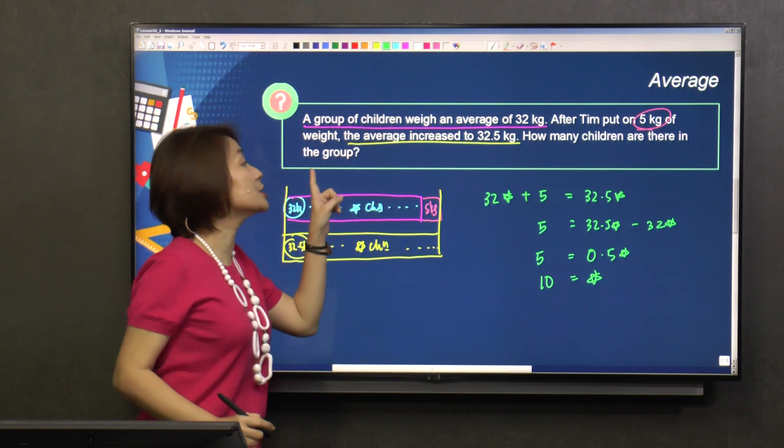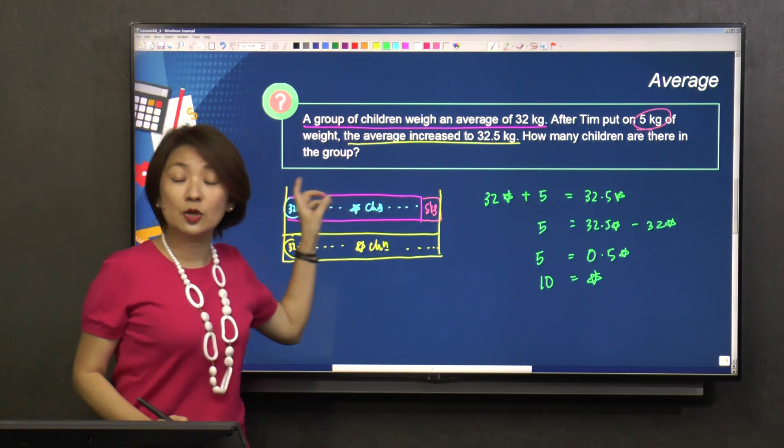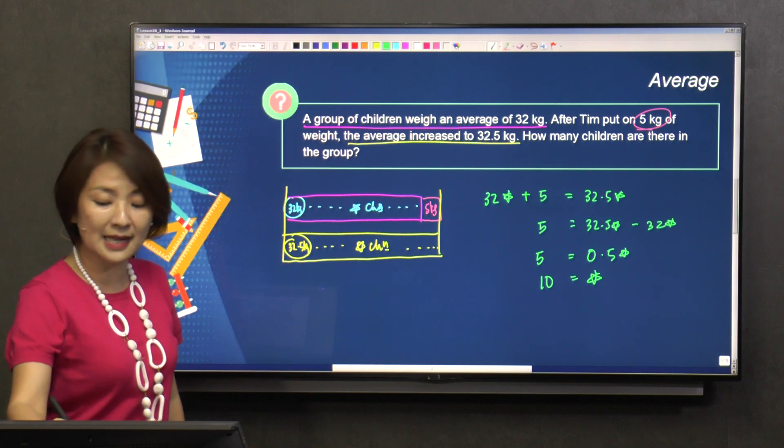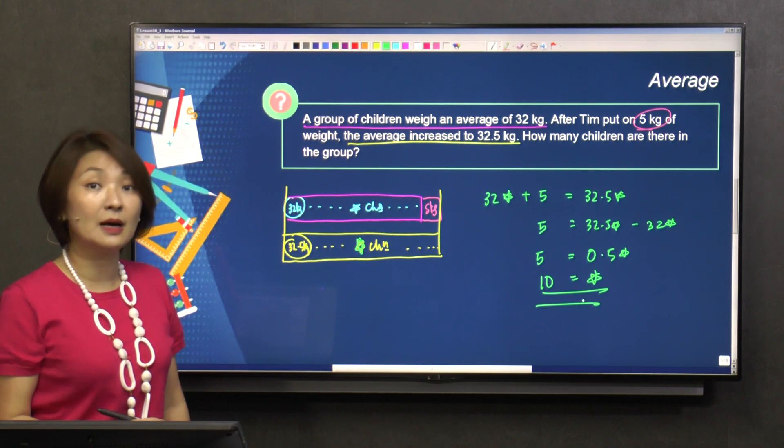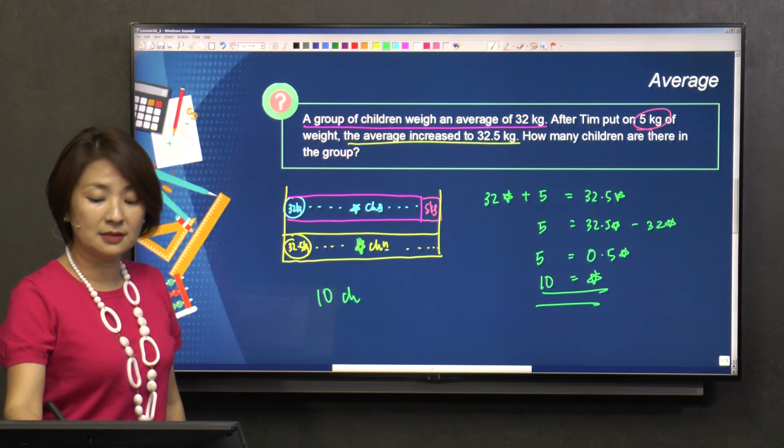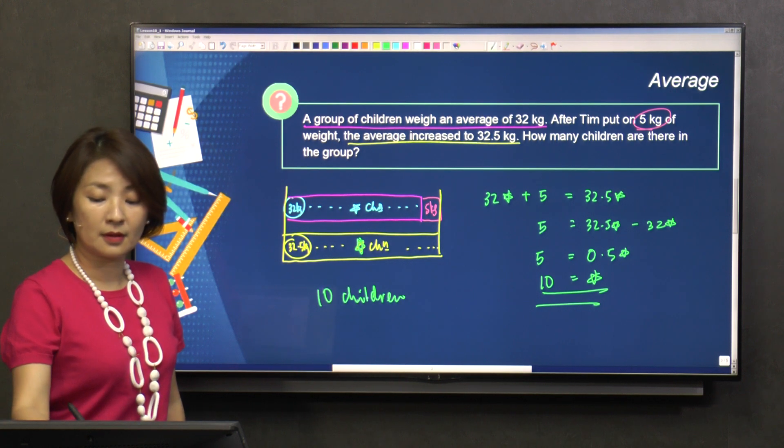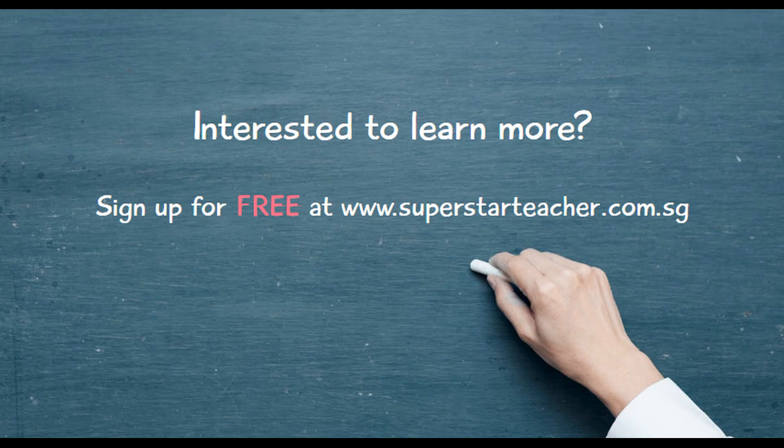The question is, how many children are there in the group? If you look at the model, children is star. If star is 10, then how many children are there? 10 children.